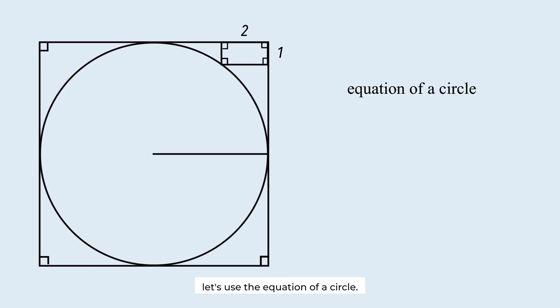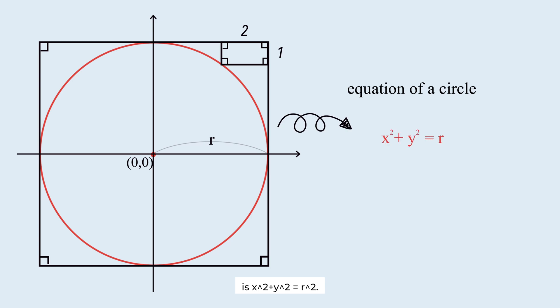Now, let's use the equation of a circle. Imagine the center of the circle is at the origin of the coordinate system. This circle is centered at the origin with the radius of r. The equation of such a circle is x squared plus y squared equals r squared.